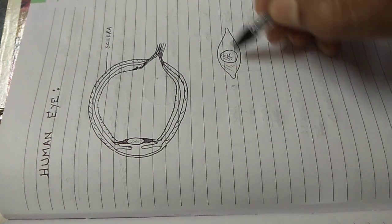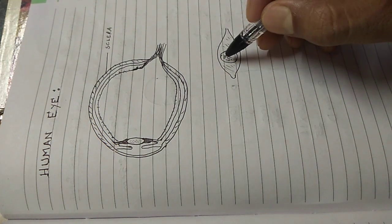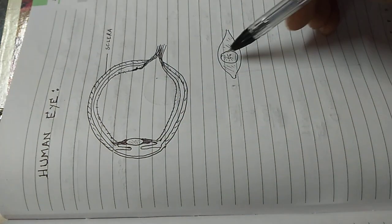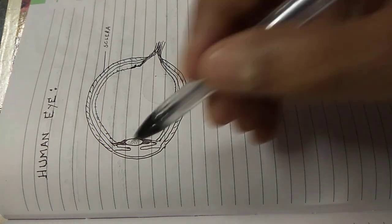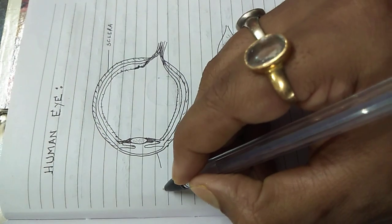This white portion that we can see is the sclera. Just above the colored portion of our eye, this white layer sclera becomes transparent, and this portion of the eye is called the cornea.